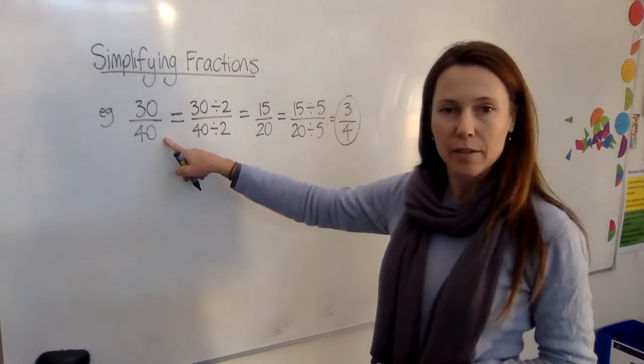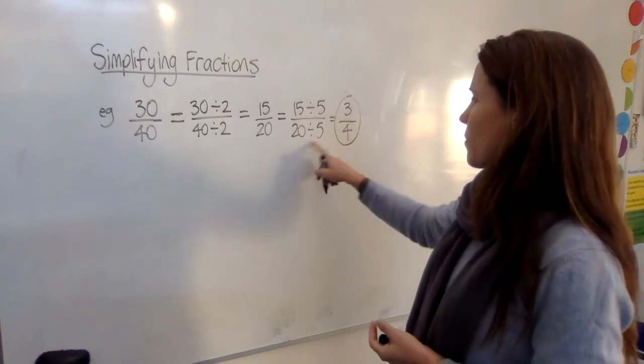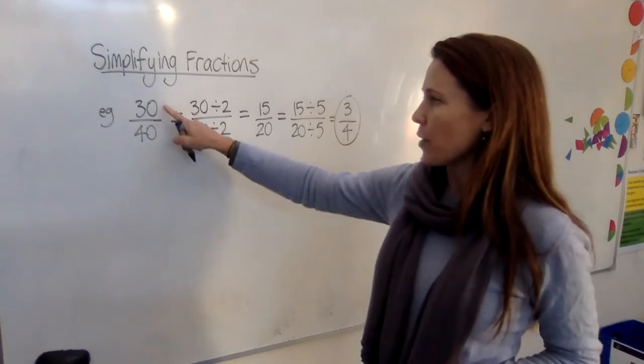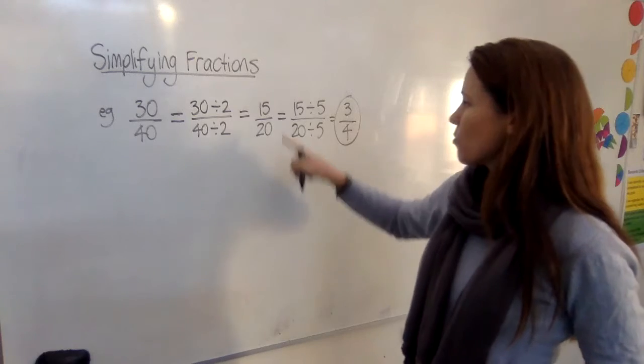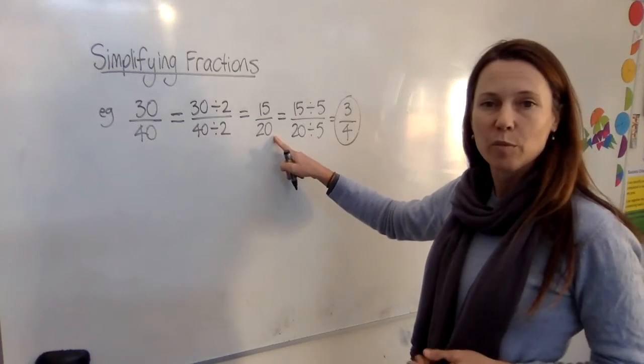Three quarters is the same as 30 40ths. Now, this was a quite quick, easy way to do it. It was really easy to spot these both were even, and I could halve them, and it was really easy to spot that these were both divisible by five.